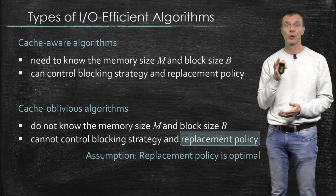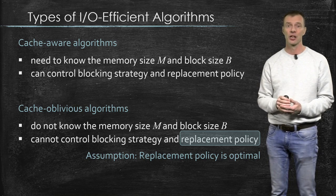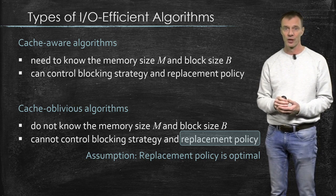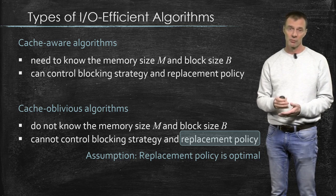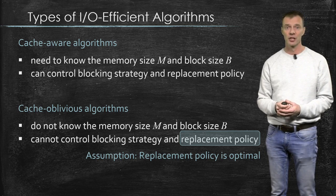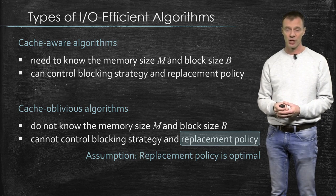So this is an assumption when we will be analyzing a cache-oblivious algorithm. And this assumption seems actually quite strong and unrealistic, but as we will see in some later lesson, it's actually not that unrealistic.